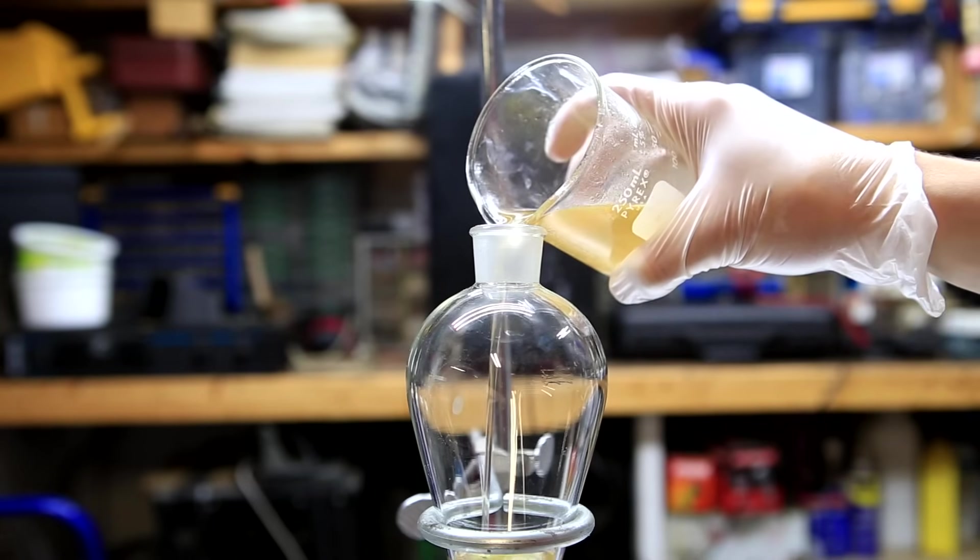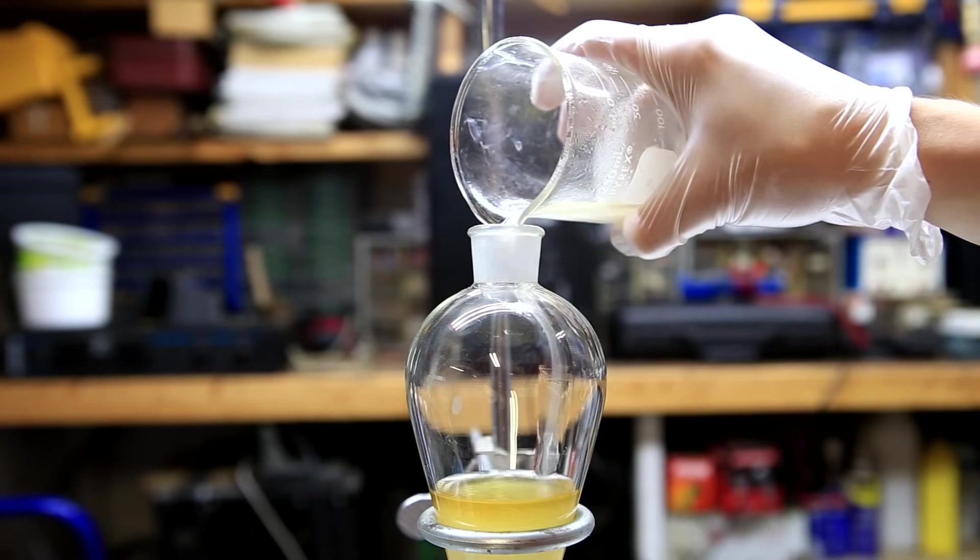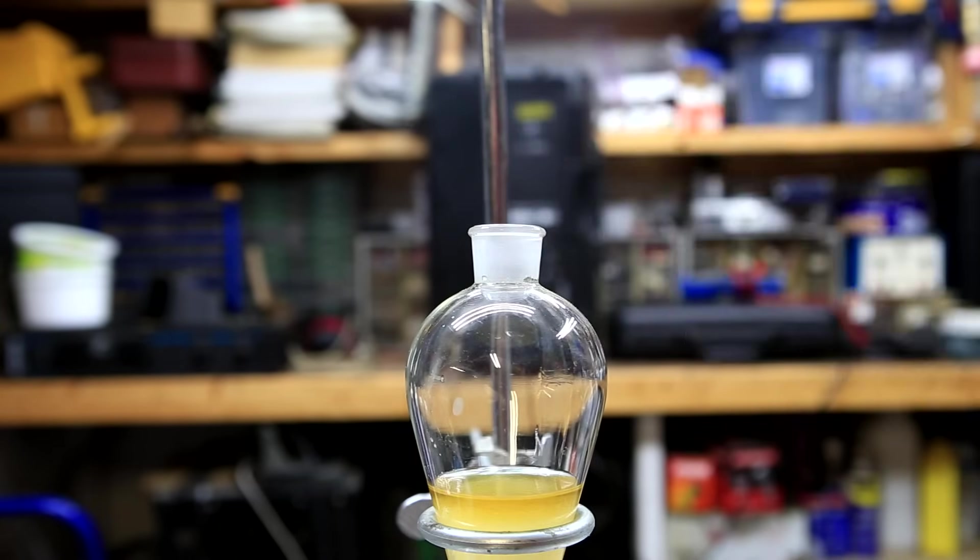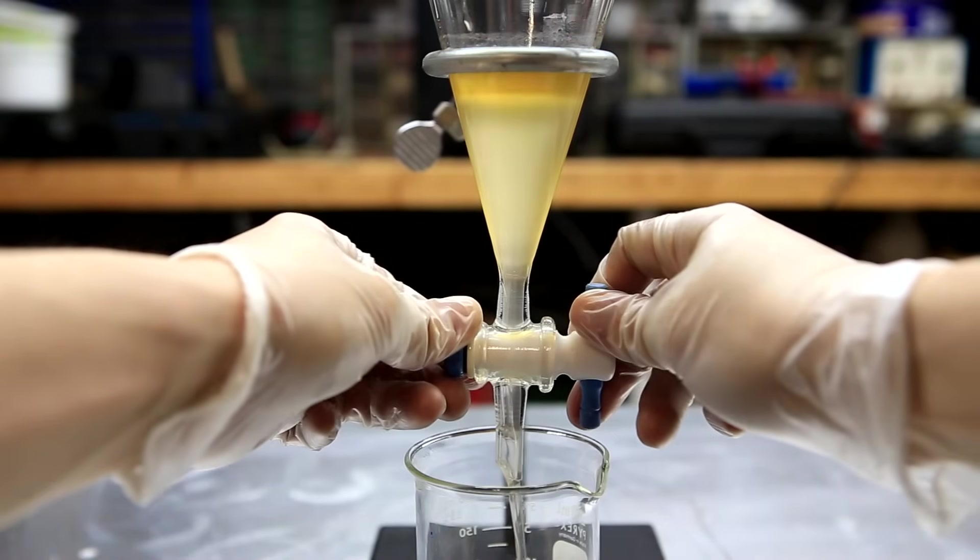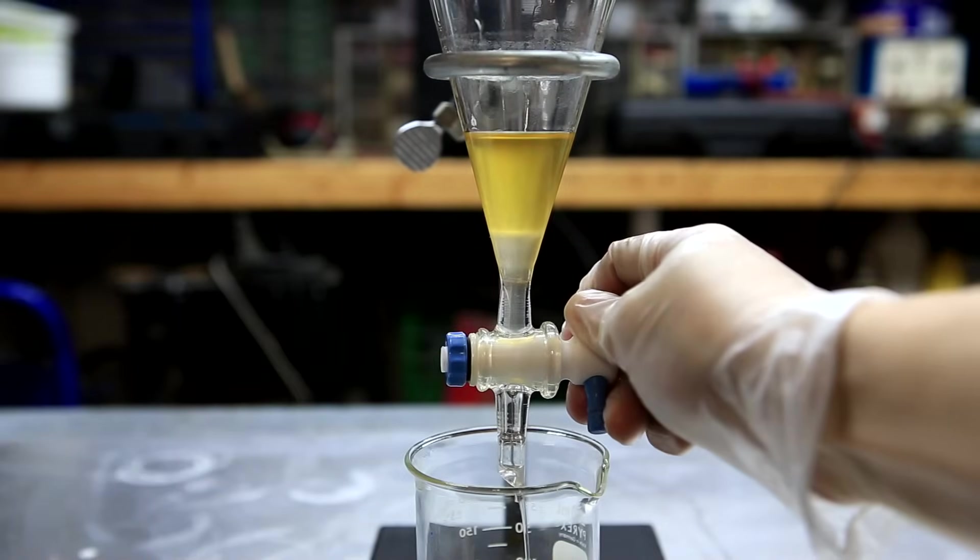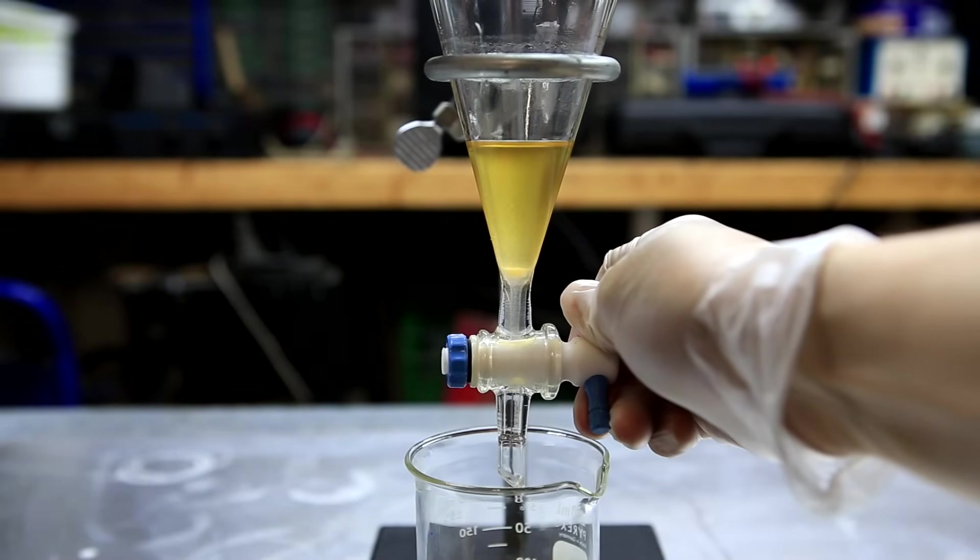The mixture was transferred to a separatory funnel, leaving as much salt as possible at the bottom of the beaker. The layers were allowed to separate and the lower layer was removed from the upper layer. As stated before, we want the lower layer which contains the glycerin.